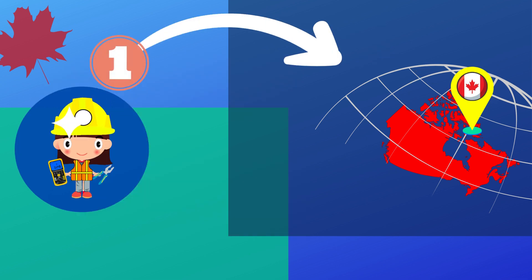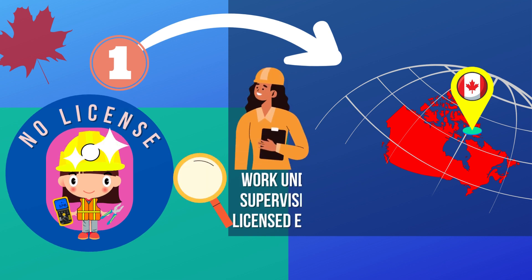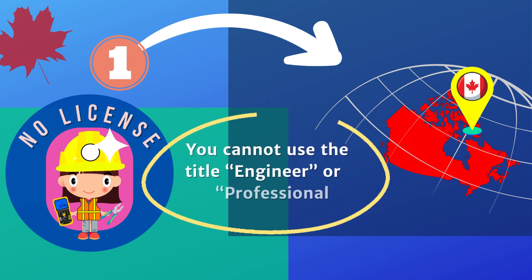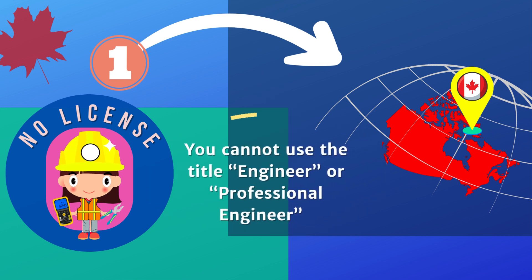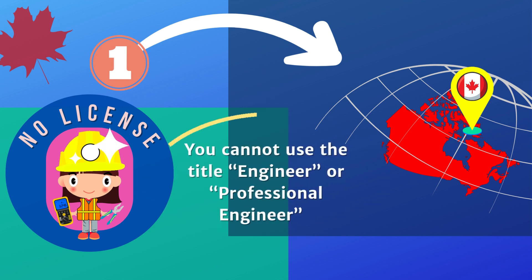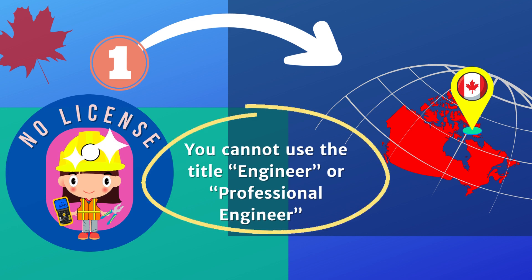First, you can work in the engineering field without a license for as long as a licensed engineer supervises you and takes responsibility for your work. But if you choose this path, you cannot use the title 'engineer' or 'professional engineer,' because these titles are for those with a valid Canadian engineering license.